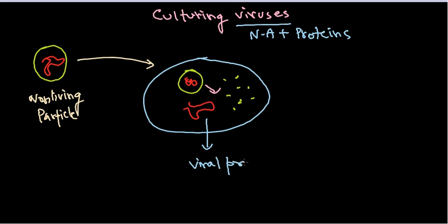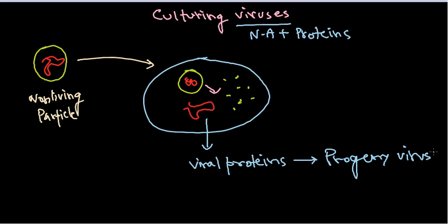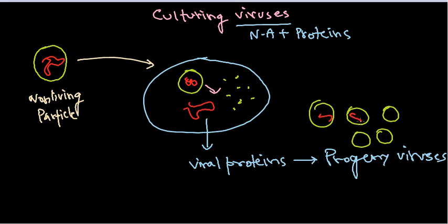The genetic material of the viruses triggers transcription and finally produces some viral proteins. Using these viral proteins, they can produce progeny viruses — a lot of viruses are generated. These progeny viruses can degrade the cell and leave outside, or sometimes they come outside by taking some region of the cell membrane from the host cell.